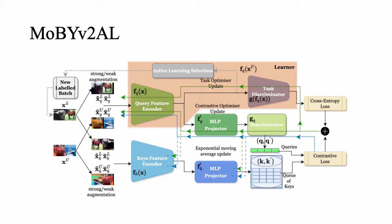Briefly going through the pipeline: we have a query-key encoder that plays two roles — to map the features for the task discriminator for classification, and to capture contrastive visual representation with the asymmetry of the query and key models. For unlabeled data, the blue lines show the backpropagation of contrastive loss and its exponential moving average in dashed lines. For labeled data, the green lines also minimize the cross-entropy loss during training. Once training ends, the unlabeled samples pass through the learner formed by the query encoder and the task discriminator. Finally, for the active learning selection, the obtained query representations from both labeled and unlabeled samples are processed for the core set sampling.